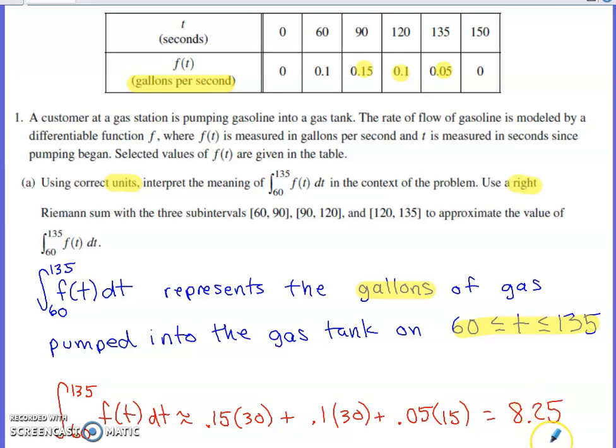Firing that into the calculator gives you 8.25. So we had approximately 8.25 gallons of gas enter the tank on the interval from 60 to 135.